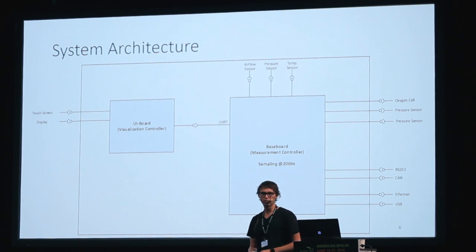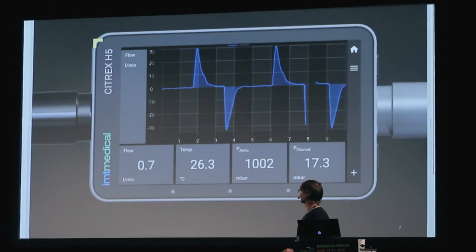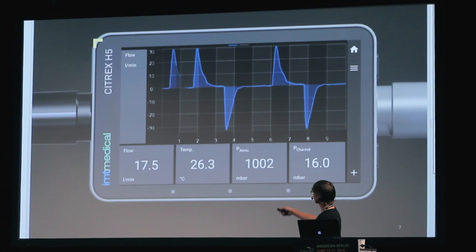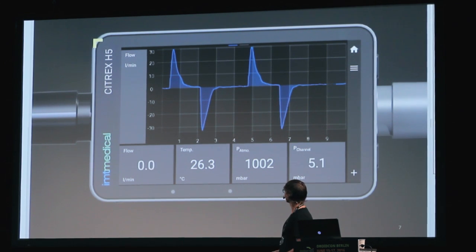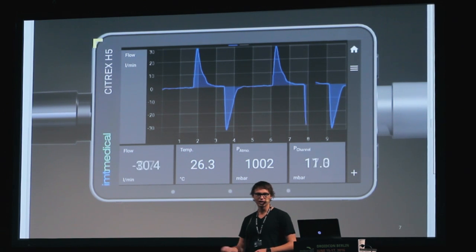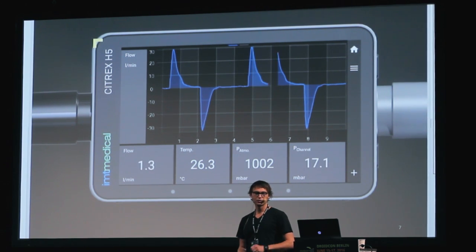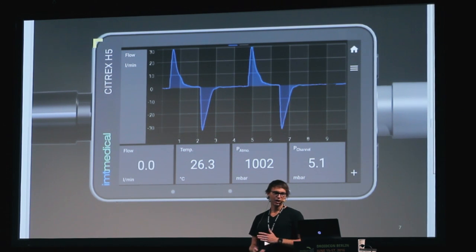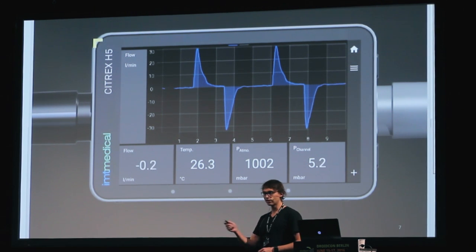The UI board is our custom hardware. We have our custom BSP running, and we have our own application running on it. But as a developer, when you're in the Java world and you make software which looks like this, your product management will not be happy. The problem we faced was that the data we collected on the hard real-time system is sent out at 200 Hz to the UI.